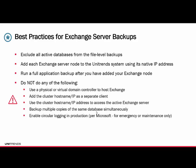A few best practices for Exchange Server backups: exclude all active databases from file-level backups. By default, our file-level backups don't grab them, but it's still good practice to exclude your mailbox directories on file-level backups when running agent-based backups. You can add each Exchange Server node to the Unitrends system using its native IP address, but check the clustering configuration to ensure you're backing up through the cluster node. Run a full application backup after adding your Exchange node — start with your smallest database to verify it works, then schedule everything else.